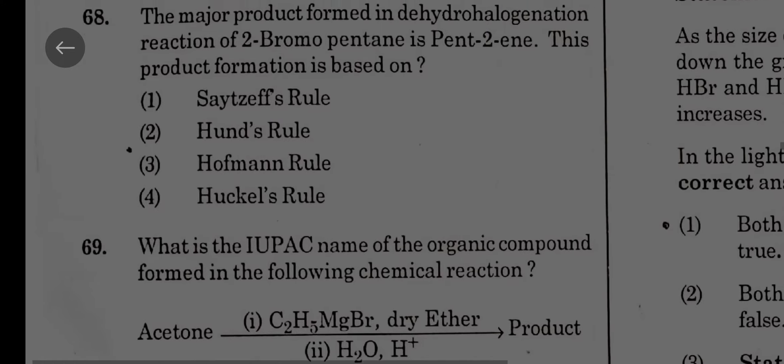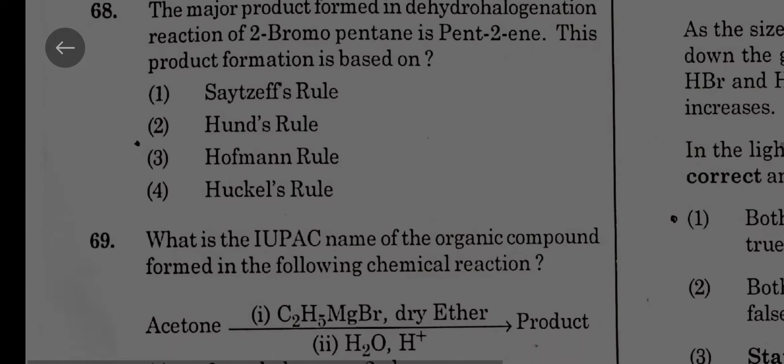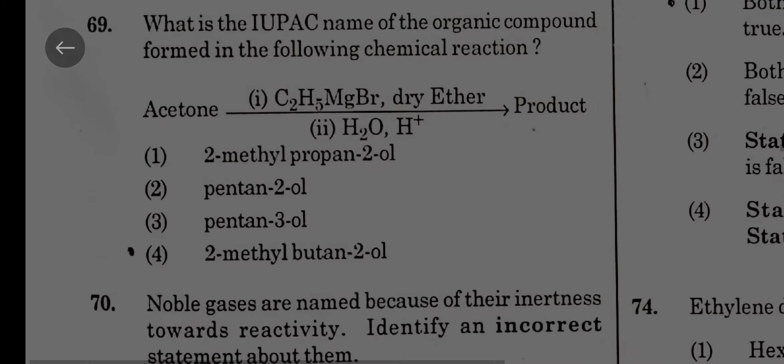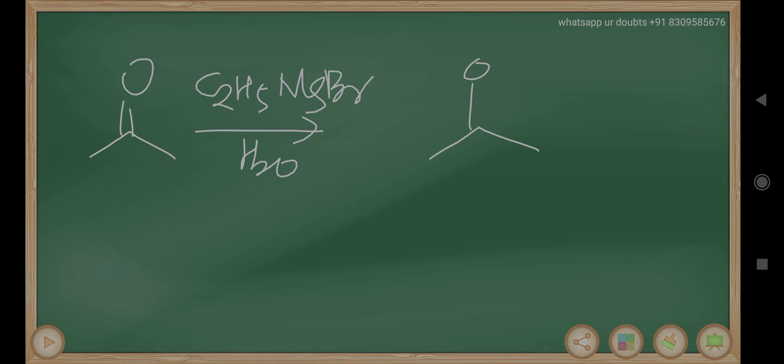What is the IUPAC name of the organic compound formed in the chemical reaction? Acetone when reacts with C2H5MgBr, the reaction will be like this: acetone when treated with C2H5MgBr then followed by water, the reaction will give OH. Number of carbons will be one, two, three, four. So second place methyl, second place OH, so 2-methyl-2-butanol is the answer.